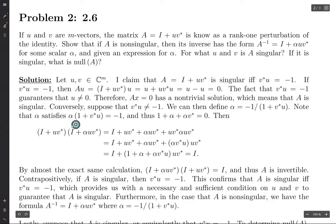Note that alpha satisfies—if you multiply both sides of this equation by the denominator, you get alpha times 1 plus V star U equals negative 1. And you just move everything to one side and you get 1 plus alpha plus alpha times V star U equals zero.